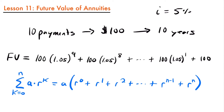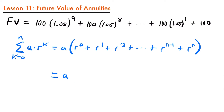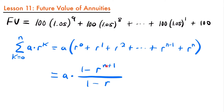This is a geometric series, which is similar to what we have for our annuity. This is helpful because we know a formula that allows us to calculate the sum of a geometric series. That sum equals a times (1 minus r to the power of n plus one) divided by (1 minus r). This gives us the sum of our geometric series — a formula you would have learned in calculus.